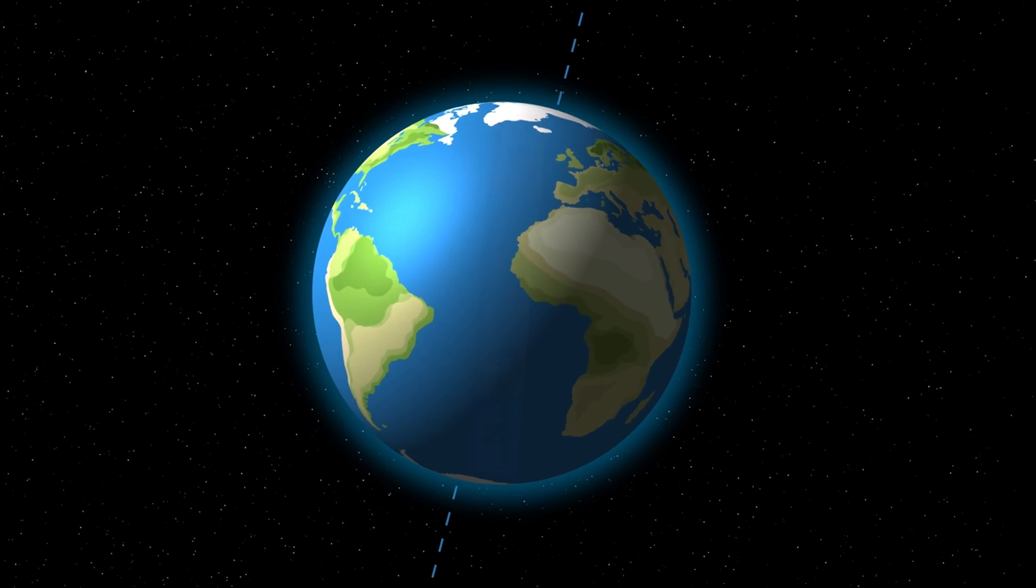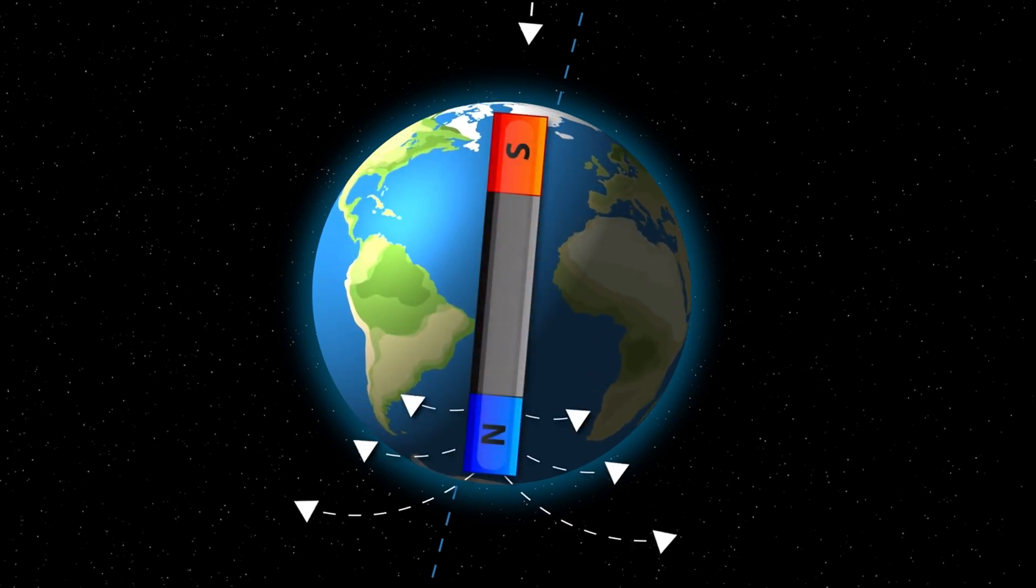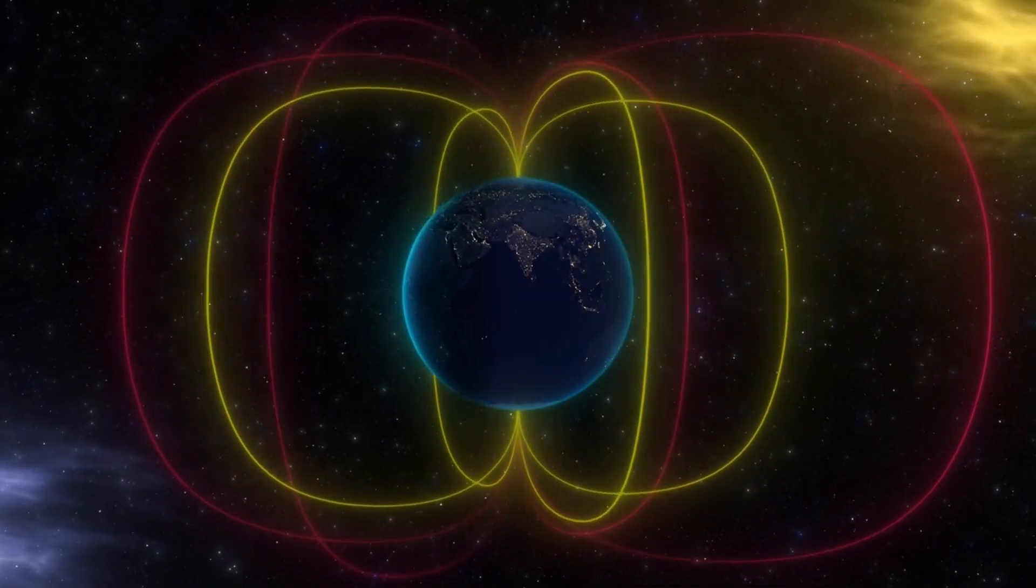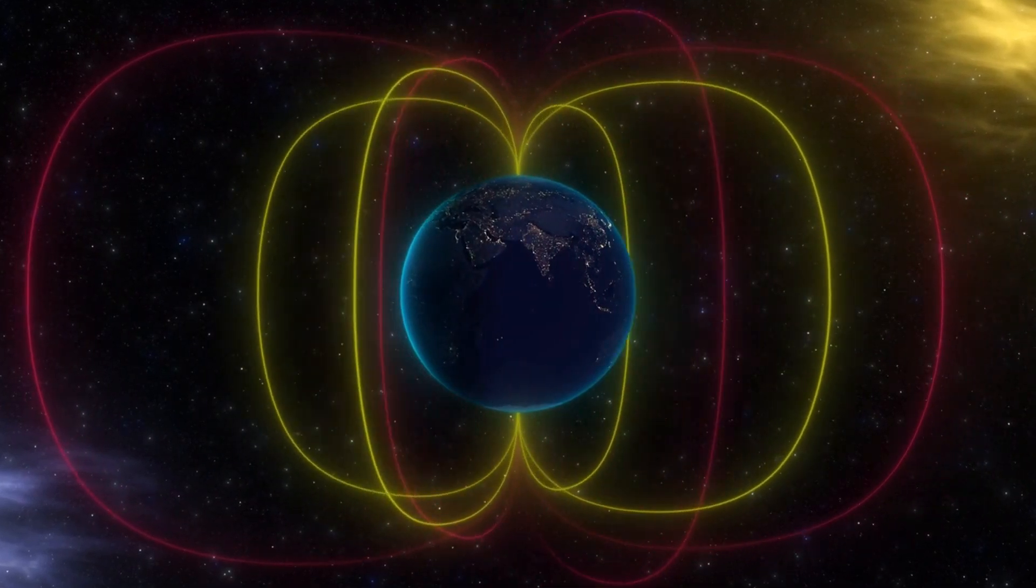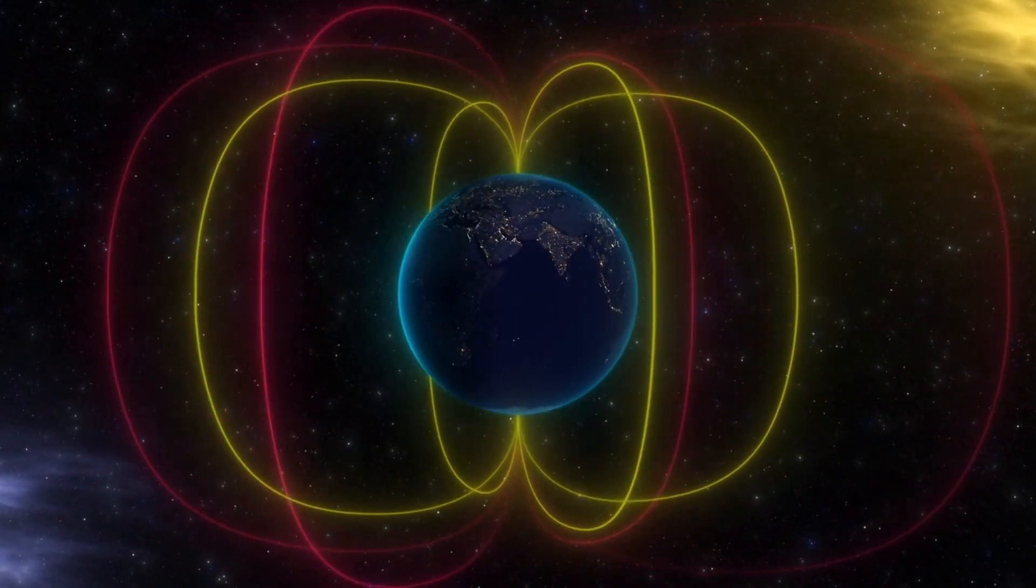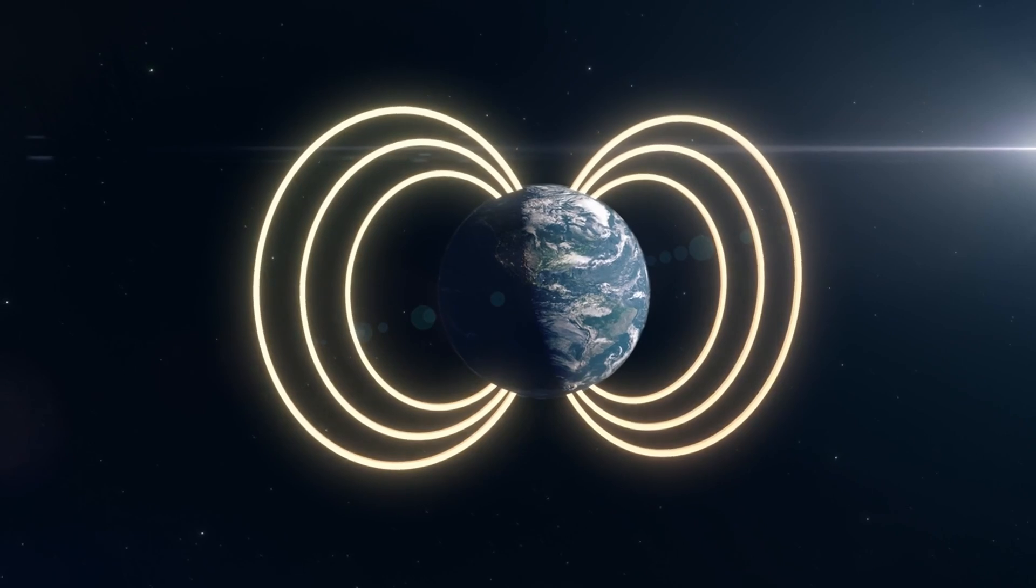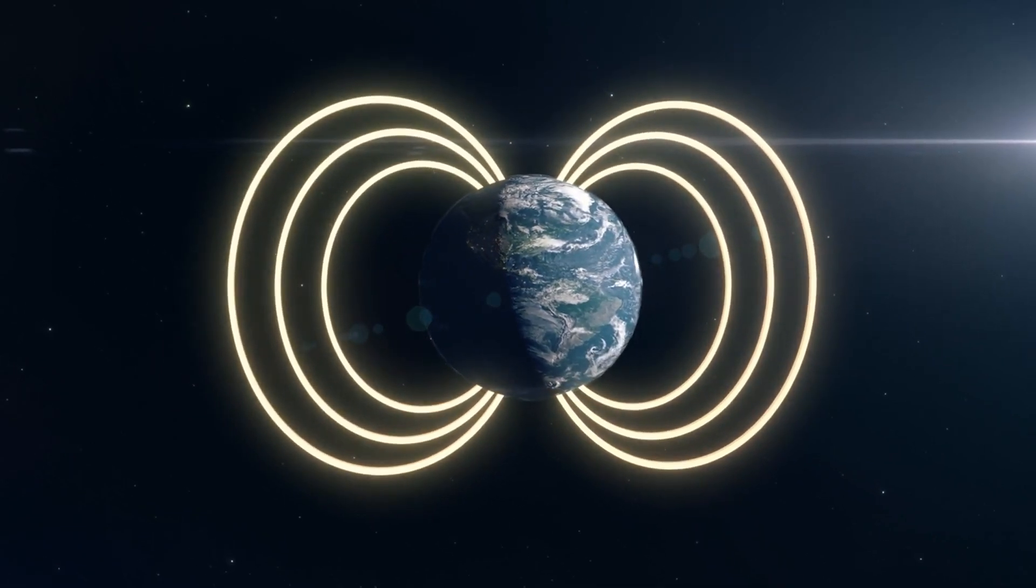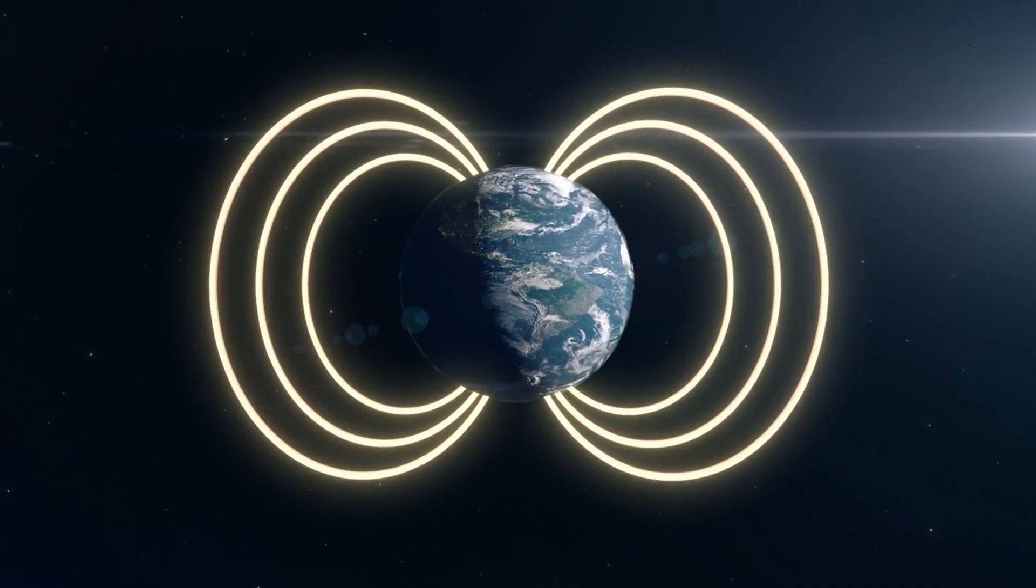The Earth's magnetic field is an essential shield that protects us from a variety of cosmic dangers. From deflecting harmful solar radiation to preserving our technology, it's a crucial part of our planet's defense system.